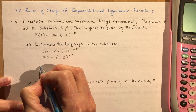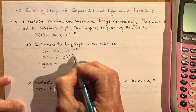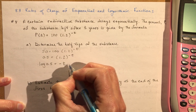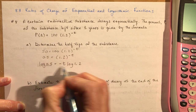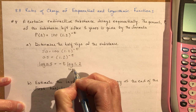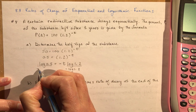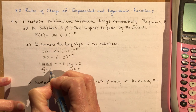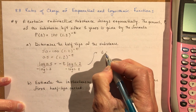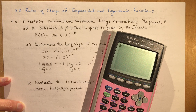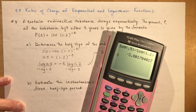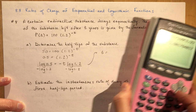Take the log of both sides. The log of 0.5 is equal to — remember I'm going to bring the variable I'm trying to solve for up front — negative T log 1.2. Now I'm going to divide both sides by log 1.2, and make it divide by negative log 1.2. That gets rid of the negative sign, so I'm solving exactly for T. T equals log 0.5 divided by log 1.2, which is approximately negative, so that gives me approximately 3.8.